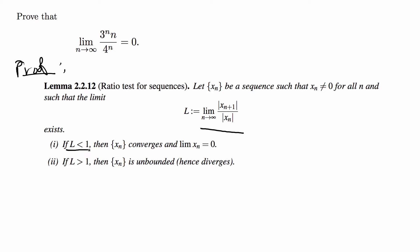If L is less than 1, then that sequence that you have, x_n, converges and the limit of x_n is equal to 0. If L is greater than 1, then x_n is a divergent sequence.